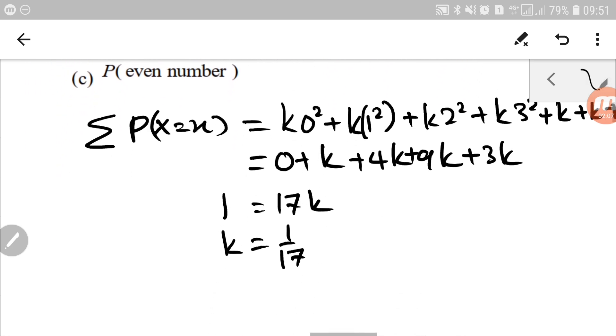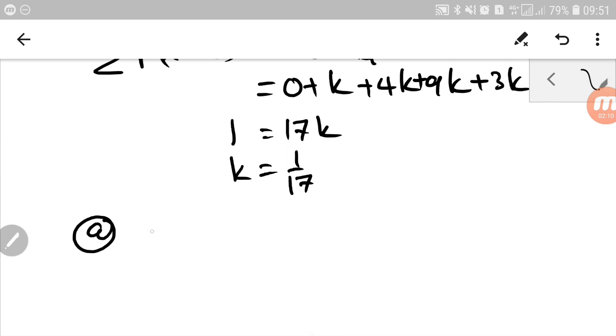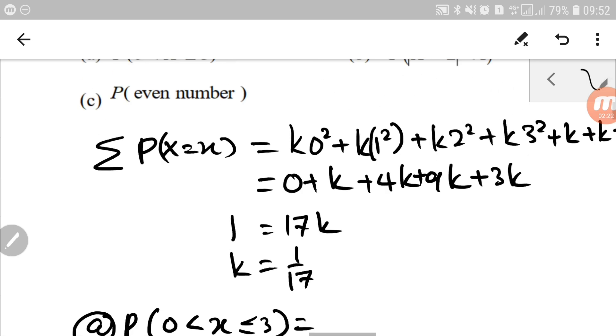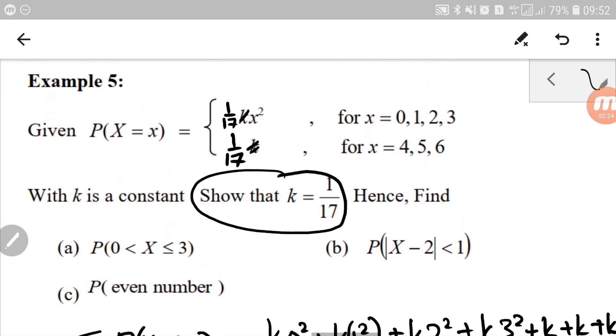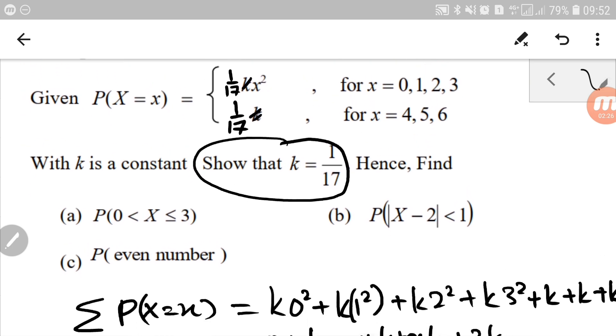The probability of 0 up until 3. So probability 0 less than x up until 3. This one means we want from this interval. As we can see, it's including 1, 2 and 3.